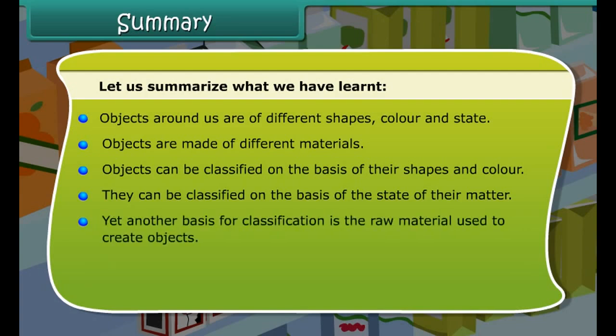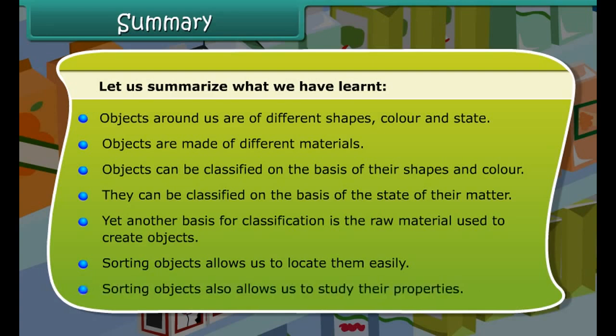Let us summarize what we have learned. Objects around us are of different shapes, colors, and states. Objects are made of different materials and can be classified on the basis of their shapes and color, on the basis of the state of matter, and on the basis of the raw material used to create them. Sorting objects allows us to locate them easily and also allows us to study their properties.